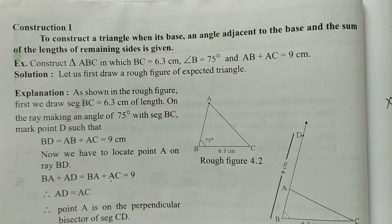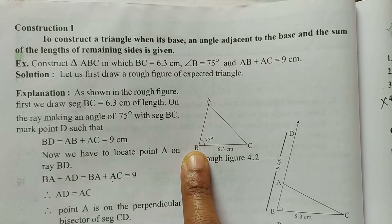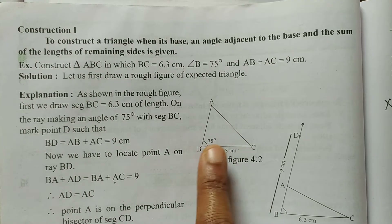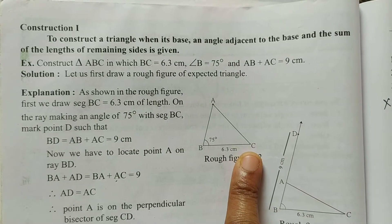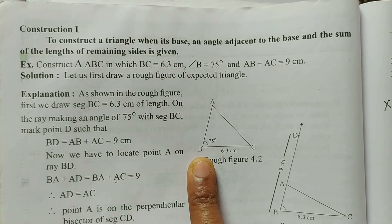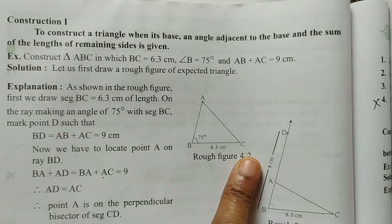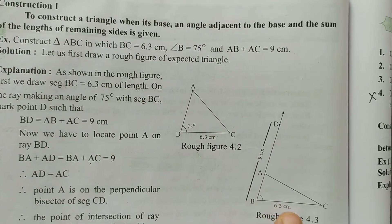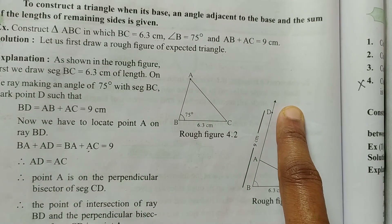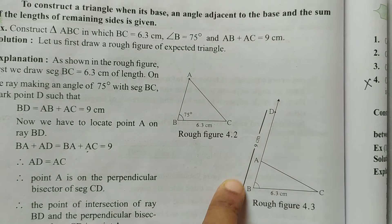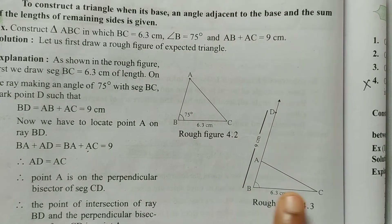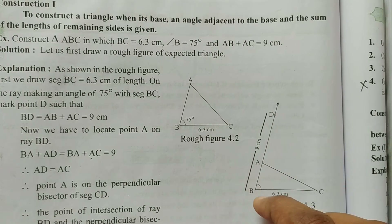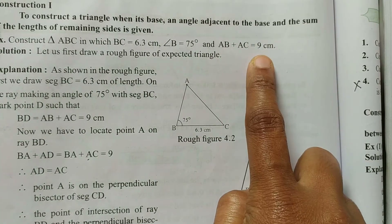Question: construct triangle ABC in which BC equals 6.3 centimetres, angle B is 75 degrees, and AB plus AC equals 9 centimetres. Now we are first drawing a rough figure. So BC is 6.3, angle B is 75 degrees. Now what you are going to do is for this particular figure, we will be taking BD which is equal to 9 centimetres, because we do not know where this point A lies. We will construct angle B 75 degrees and on this line we are going to take BD equal to 9 centimetres, the sum of AB plus AC.